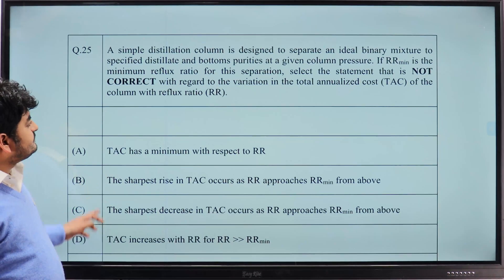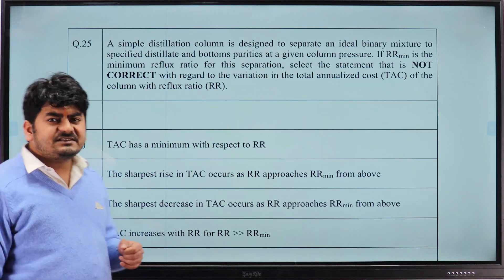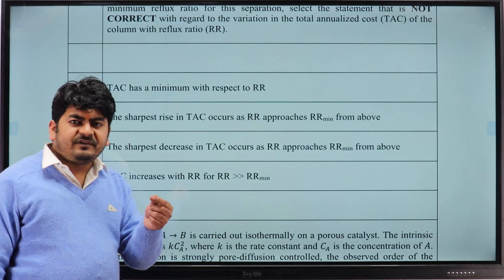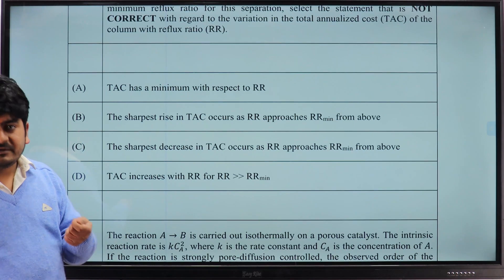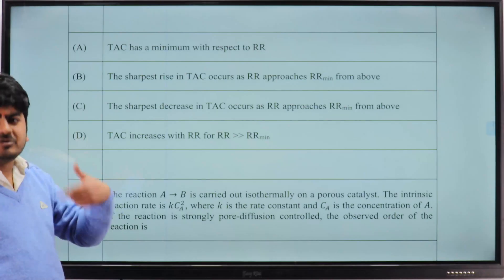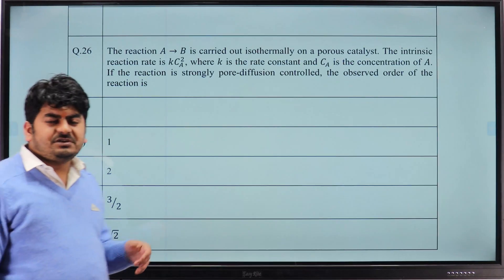Distillation column, total reflux ratio, minimum reflux ratio, total annualized cost. Option C is the correct answer, that at optimum reflux ratio we have the sharp decrease in the curve of the TAC, total annualized cost curve. We will see that tomorrow.